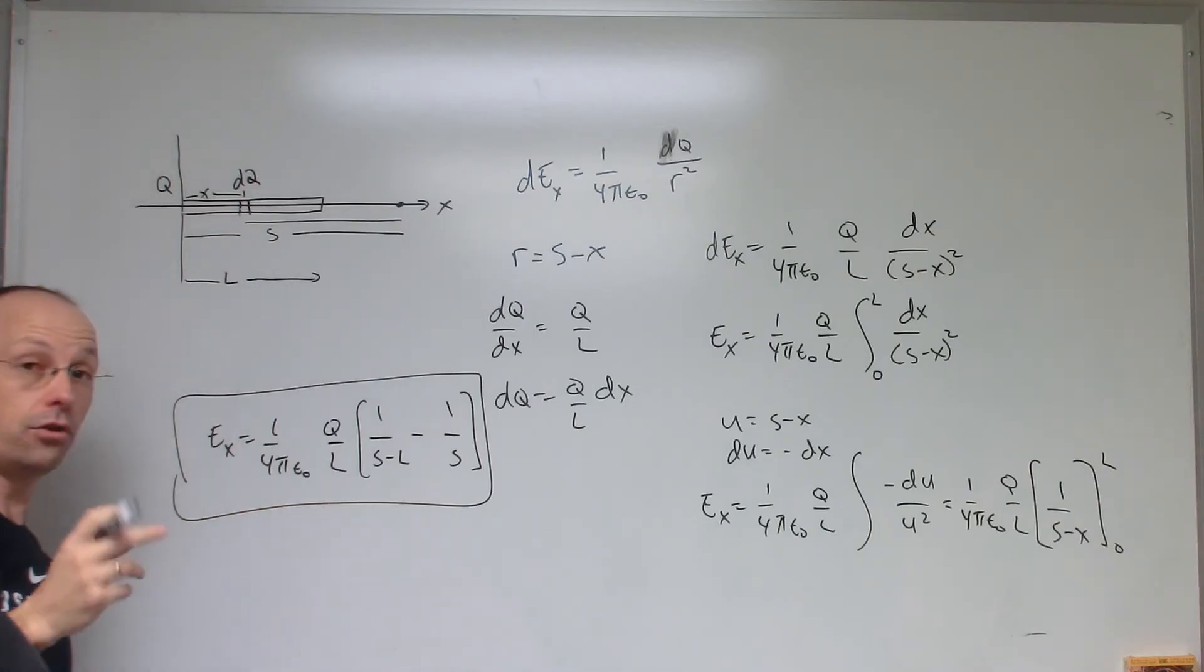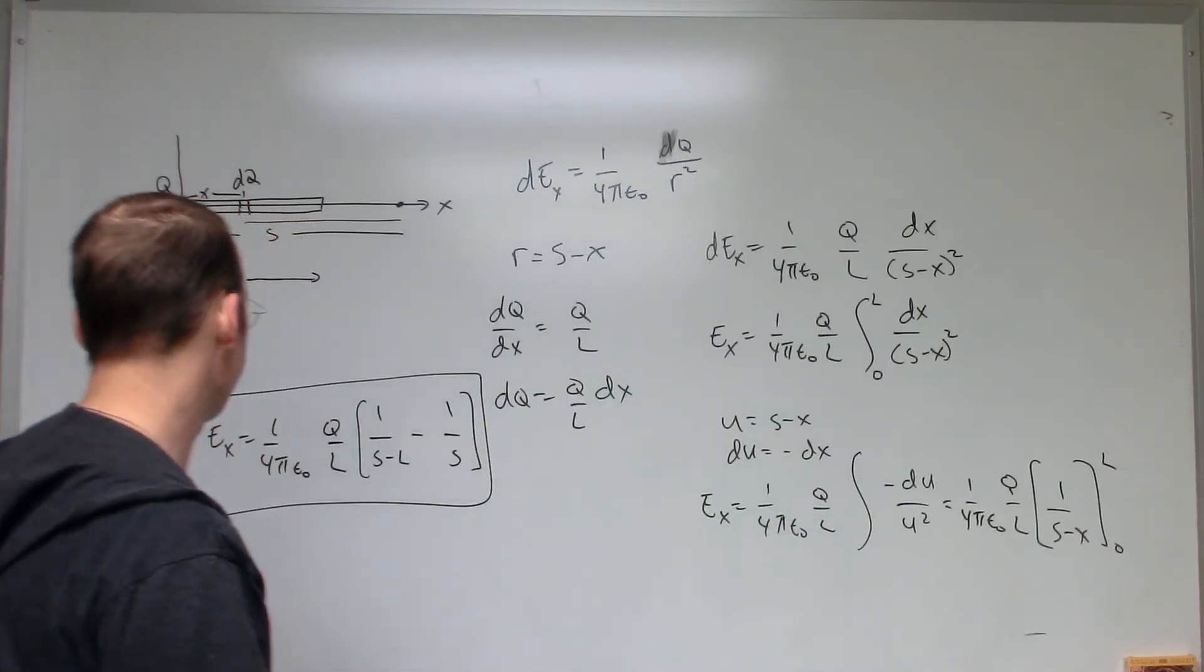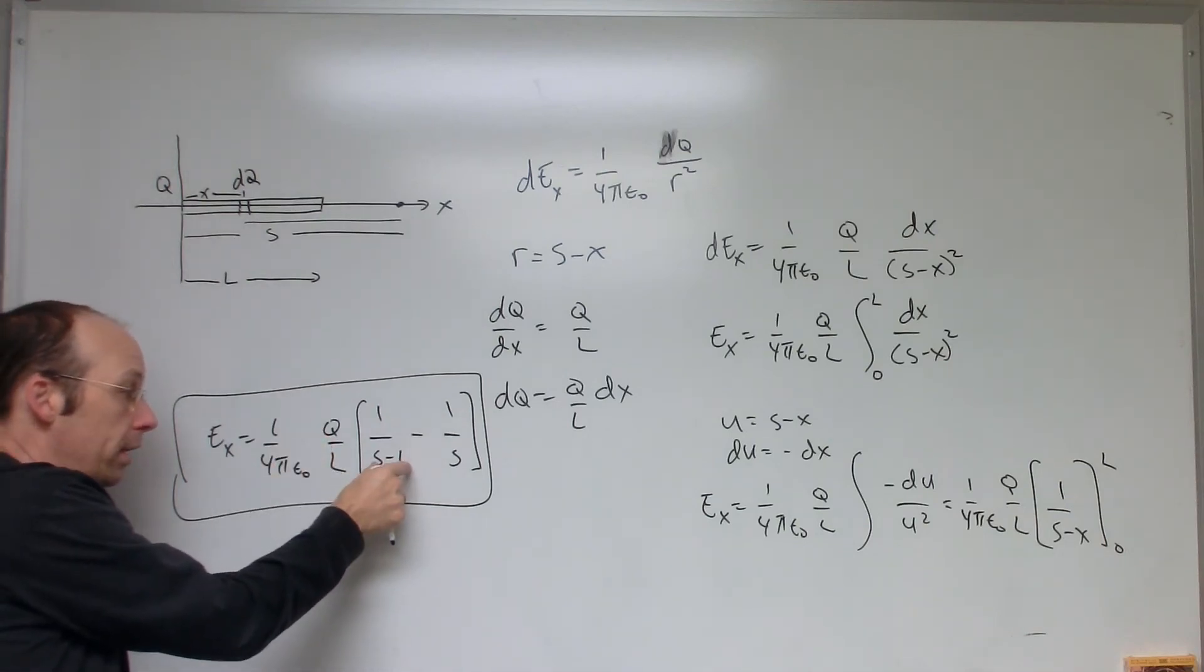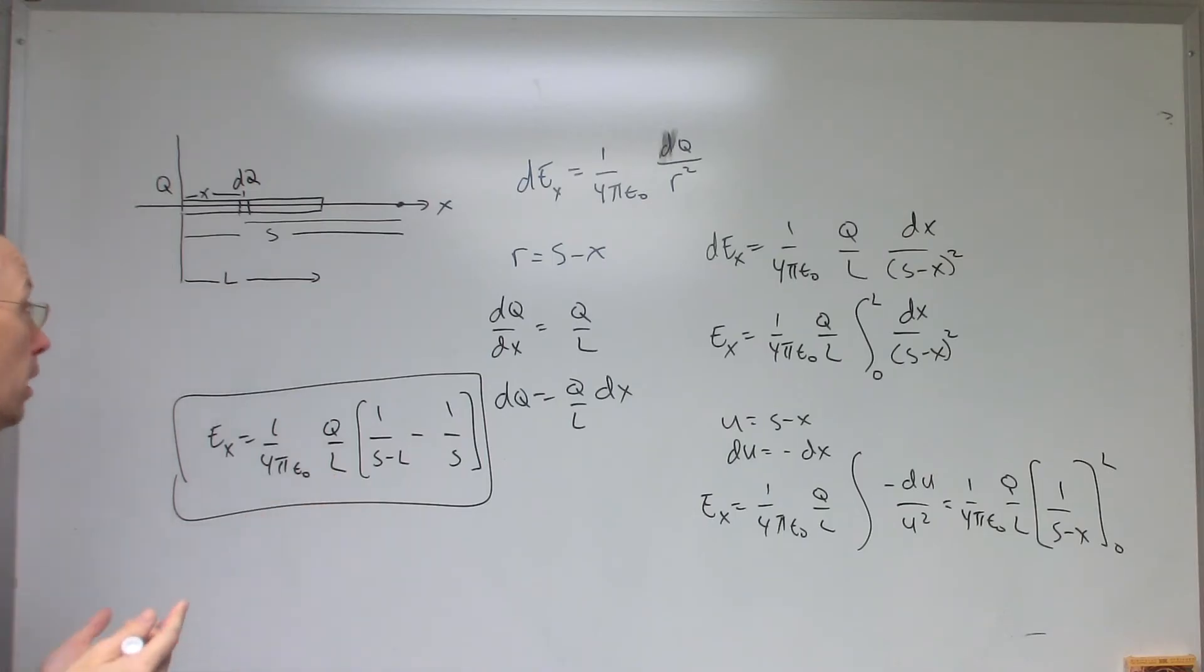Okay, let's check the units first. It should have units of the same thing as an electric field due to a point charge. So it should be Q over distance squared. Here I've got the Q. Here I've got one distance. I'm going to multiply it by another. So I do get distance squared.